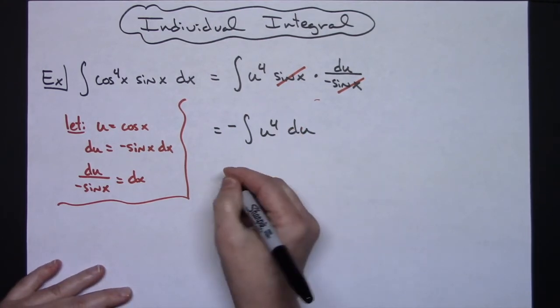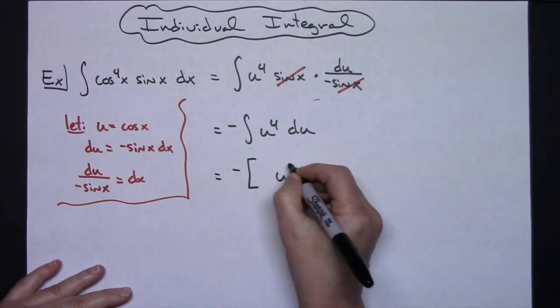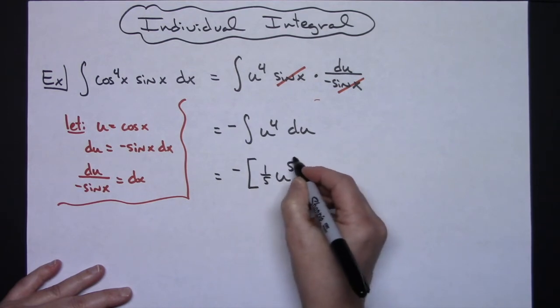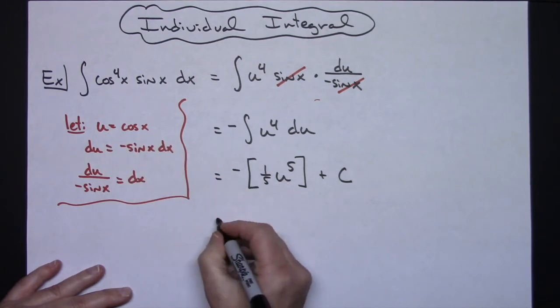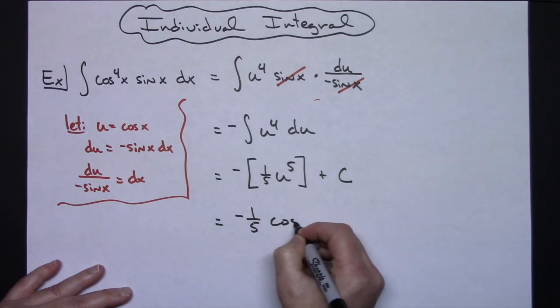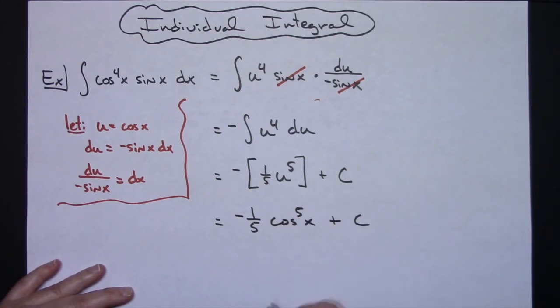We can add one to that exponent to get a five. So we'll have negative u to the fifth and putting that in front here we'll have a one-fifth and then we'll have a plus c. Replacing u with cosine of x we'll have a negative one-fifth cosine to the fifth plus c.